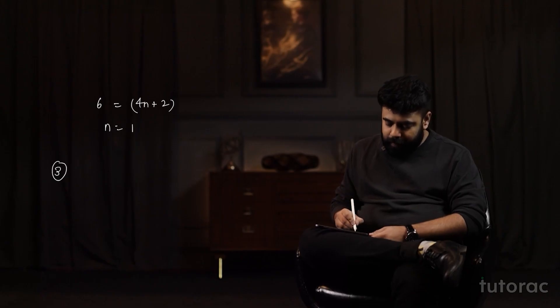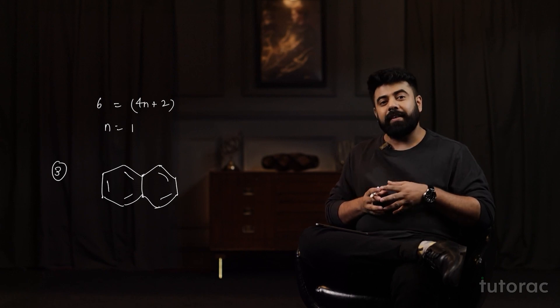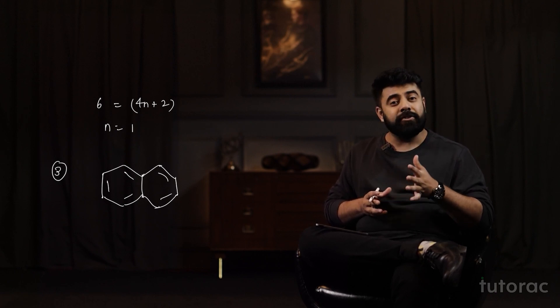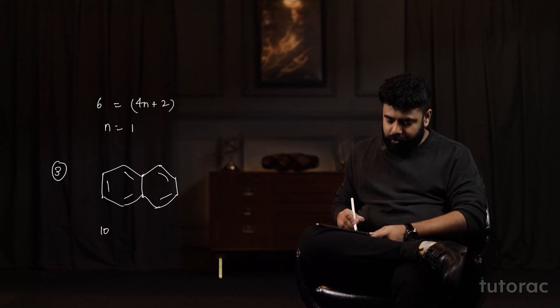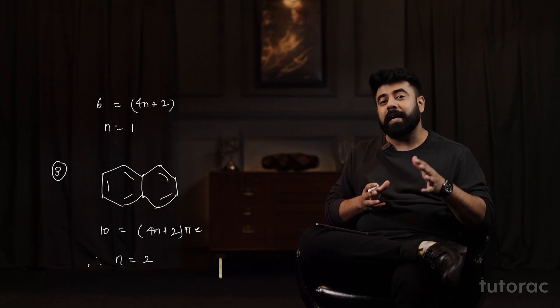Let us take a third compound — naphthalene. The structure of naphthalene appears like this. As you can see, there are 5 pi bonds, which means there are 10 pi electrons. This 10 should be equal to 4n + 2 pi electrons. When I substitute the values, n comes out to be equal to 2, which confirms that naphthalene is also an aromatic compound. The criteria for aromaticity is simple: it should have a planar structure with every carbon sp2 hybridized, a ring-like or cyclic structure, and it should obey Huckel's rule. Understanding aromatic compounds, how they are prepared and how they react is what you will see next.